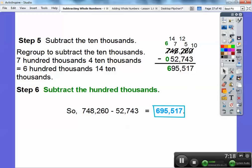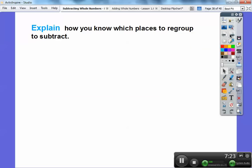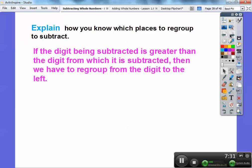Can you guys do that? Can you borrow from the next column to the left when the number is bigger on the bottom? Explain how you know which place values to regroup and subtract. If the digit being subtracted is greater than the digit from which you are subtracting, then you have to regroup from the digit to its left. Does that make sense?